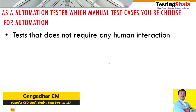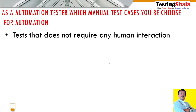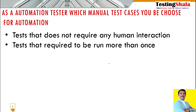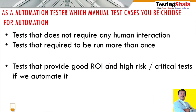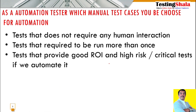The first one is: as an automation tester, we should pick test cases in such a way that no human interaction is required. If the given test cases require human interaction to execute, then you should not pick those for automation. The second one is: when test cases are required to be executed more than once in their lifetime, then definitely you should try to bring automation to those test cases.